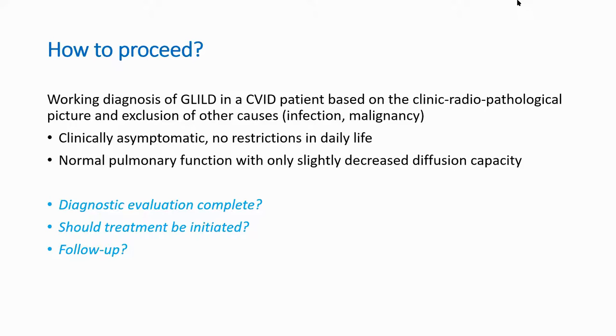John Hurst then posed a polling question to the audience: having made a diagnosis of GLILD in an asymptomatic patient with no breathlessness or cough, would you institute specific treatment for GLILD? Options were never, always, sometimes, or 'I don't know, this is too difficult.' Results showed approximately one in five would never treat, one in ten would always treat, about 40% would sometimes treat, and three in ten found it too difficult. John noted that he will share what a panel of experts said when asked a similar question.